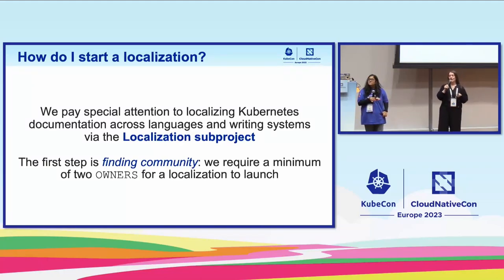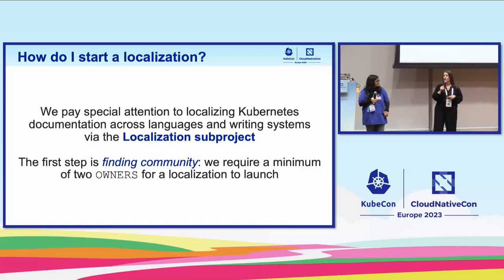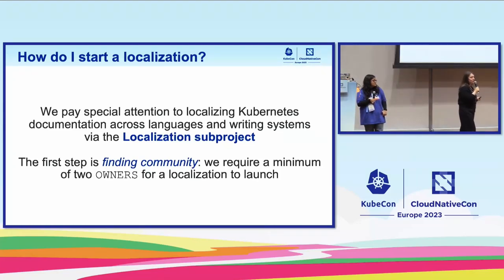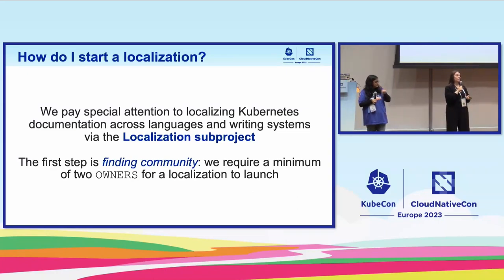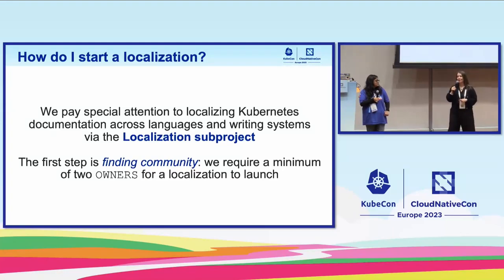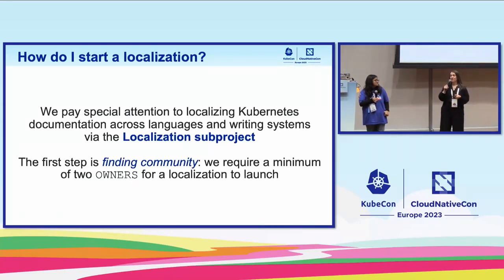We often get the question about how to get started. Community is really the first step in terms of getting started with a localization branch and launch. We need folks who are not only going to work together, but actually going to approve each other's work. You need at least two people who can help get the community started so that you can work together and begin those translations. SIG Docs has started the localization sub-project to really help with this, where you can speak to the folks who lead the sub-project about your questions.